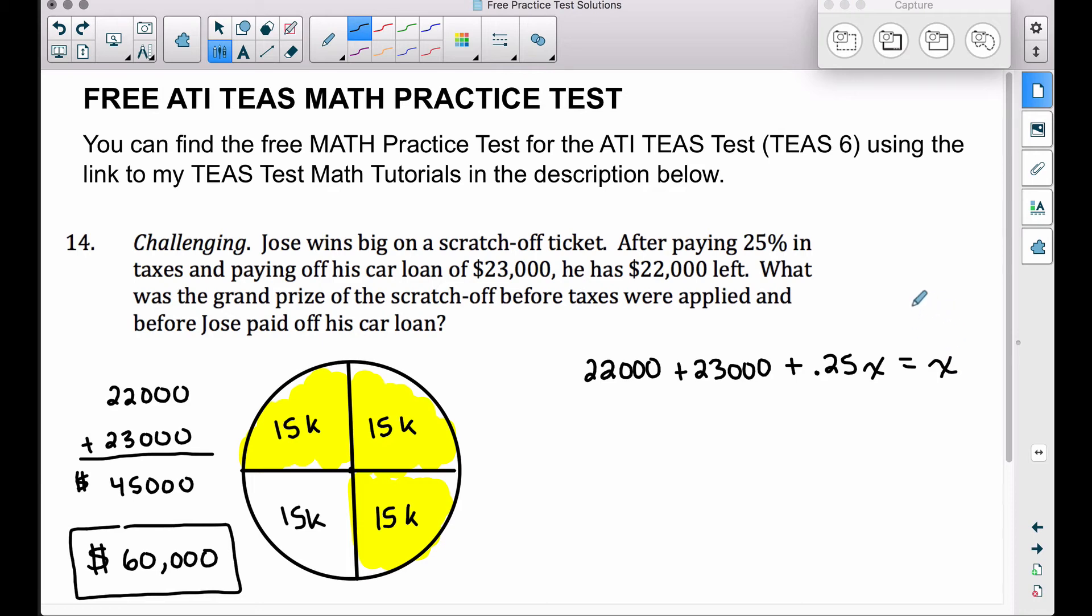So you may say where is this X coming from? This represents 25% of his winnings. Adding that on to these other values will be equal to his total winnings. So we want to solve this equation for X and we should get $60,000.